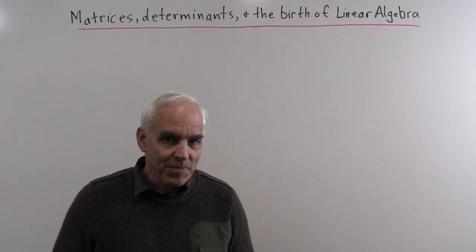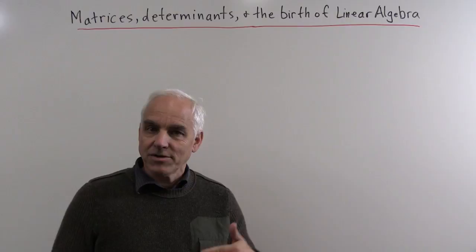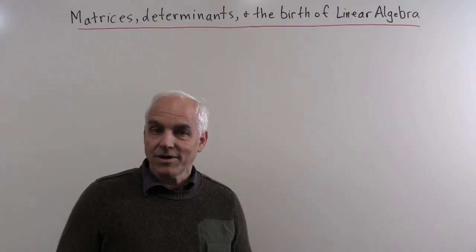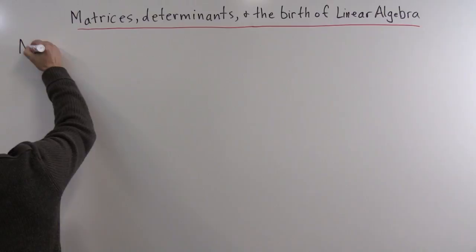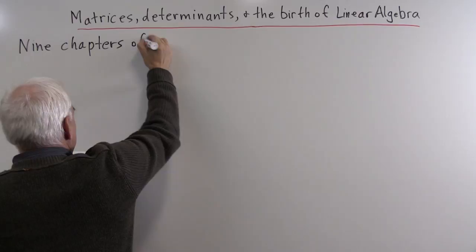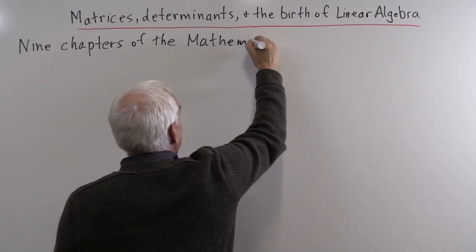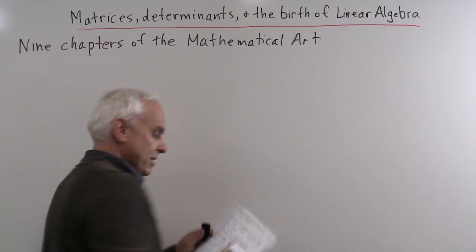But it was not always so, and in the 19th century linear algebra was just getting going. We're going to talk a little bit about the development both in the 19th century and earlier as well. The origins of the subject really go back to antiquity — to a Chinese work called Nine Chapters of the Mathematical Art, also known as the Chu Chang Suan Shu.